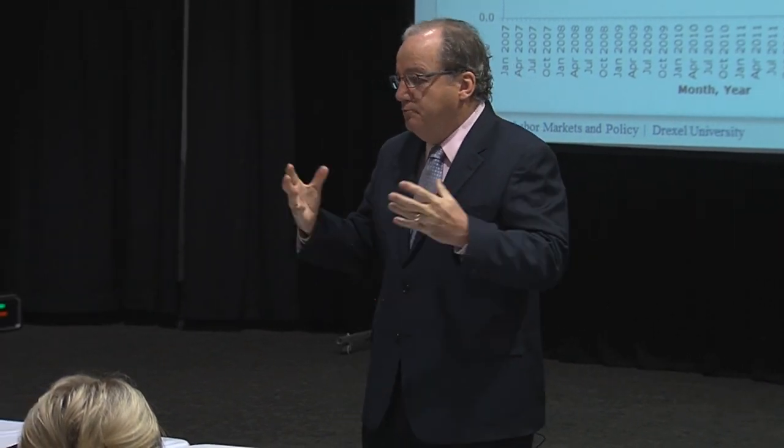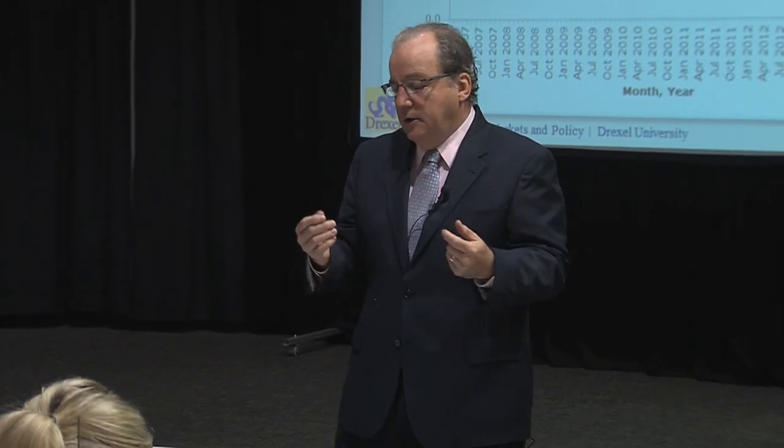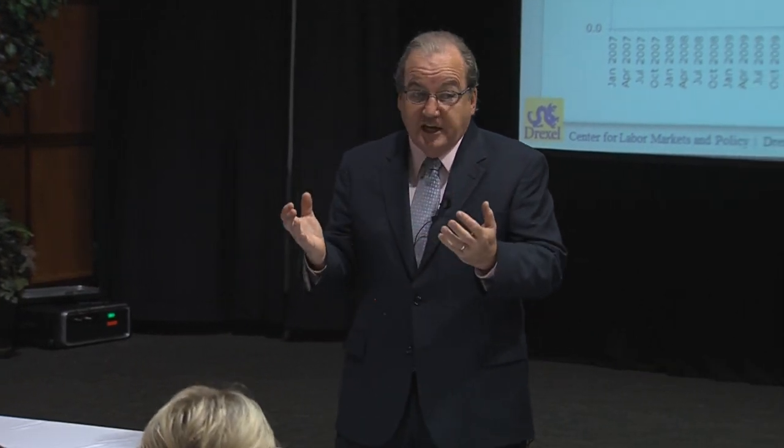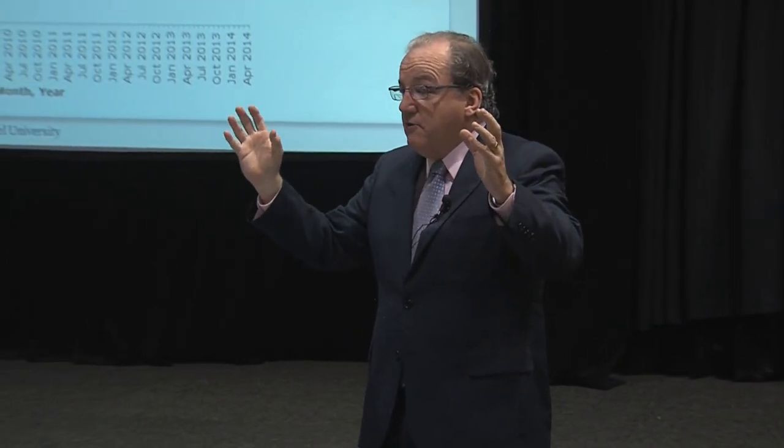Over the last four years, the Federal Reserve has put an enormous amount of money into the American economy. By the time they end this program of zero interest rate policy and quantitative easing, they'll have added about $4.5 trillion in cash into the economy. With a zero interest rate policy, the Fed charges banks basically nothing to lend money, making it cheap. When money's cheap, there's a lot of it, and that causes fear of inflation.